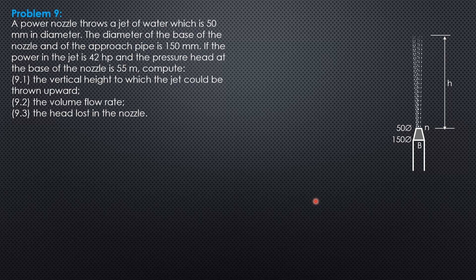So first for the vertical height to which the jet could be thrown upward, we have to write energy equation first between the base b and the nozzle tip n. So take note there is no distance between b and n so that is negligible in this problem here. So that datum should be through b, elevation 0, and it also passes through n because the distance between b and n is not mentioned or in this case we neglect it.